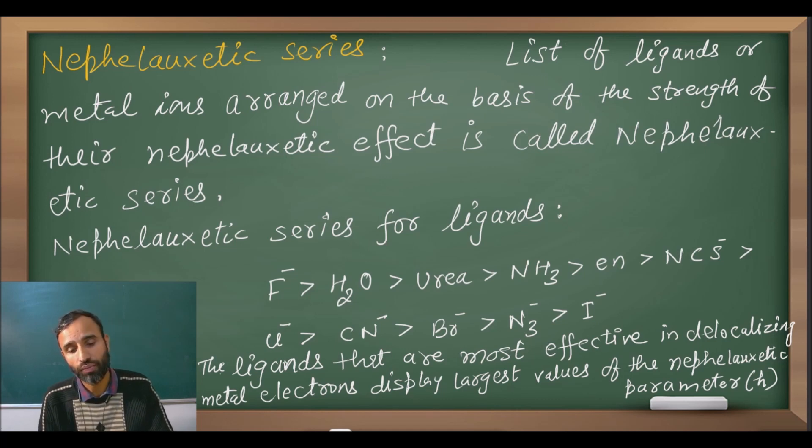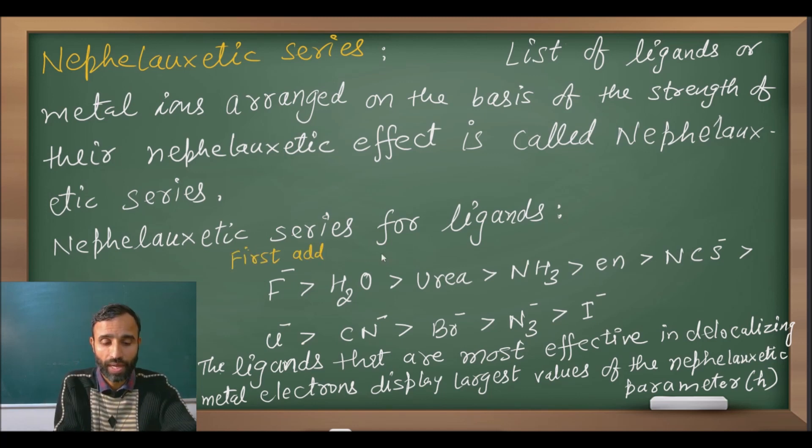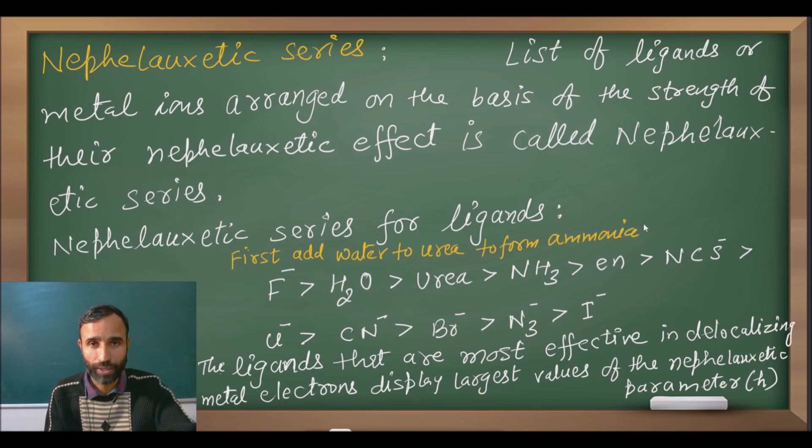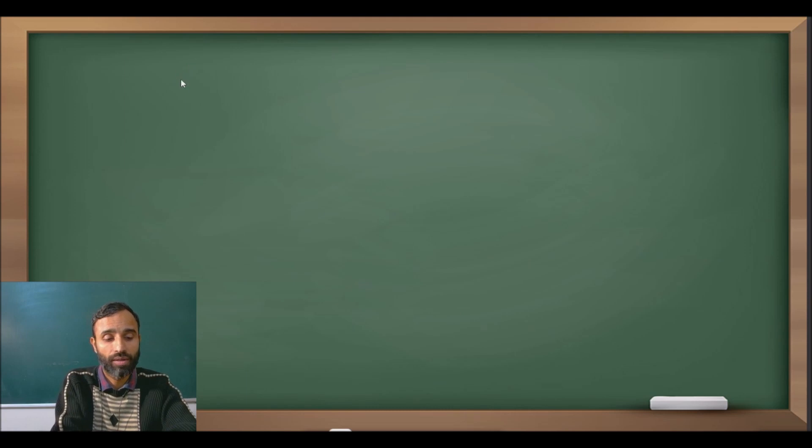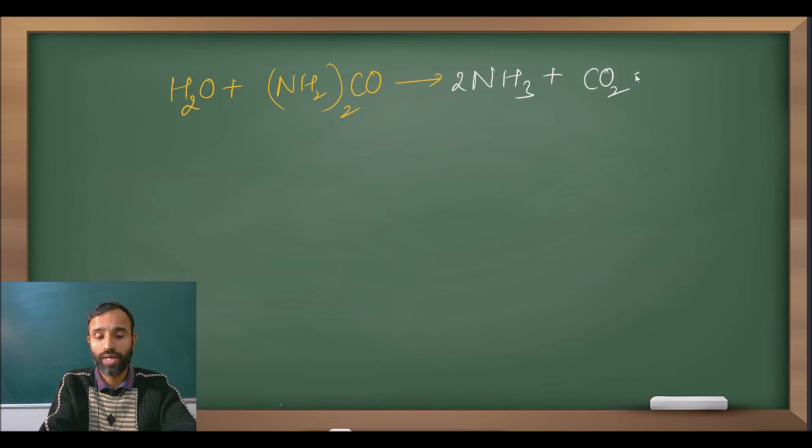First, nepheloxetic series for ligands. How to remember this series? I have one trick for you. First add water to urea to form ammonia. When you add water in urea you will get ammonia as the product along with carbon dioxide. So this is first part.